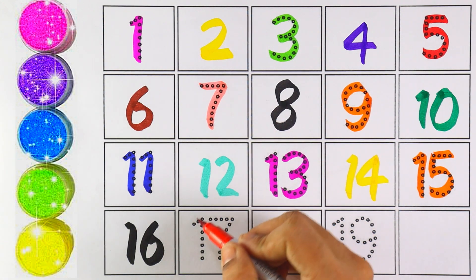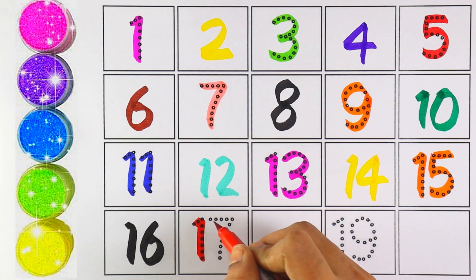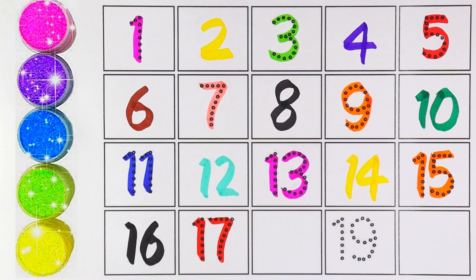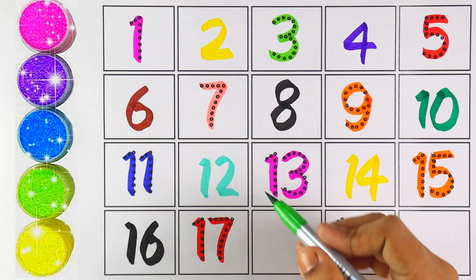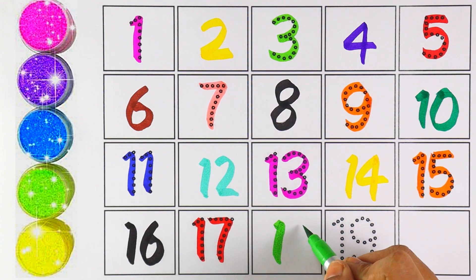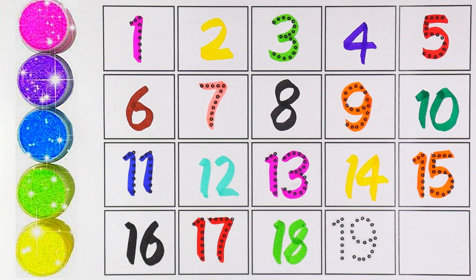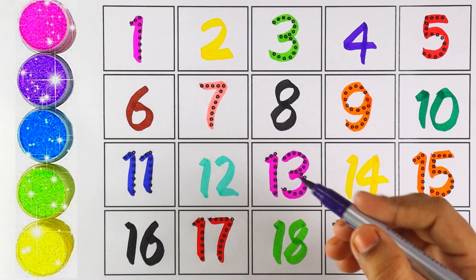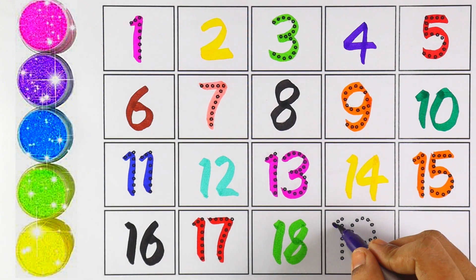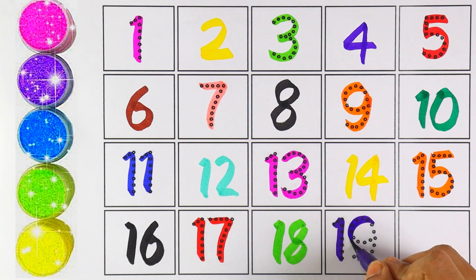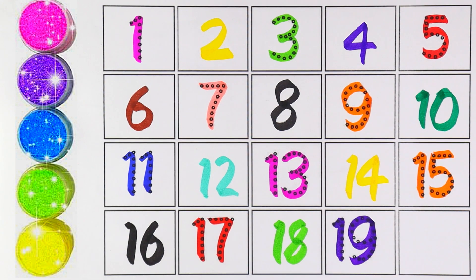Red color — number seventeen. I'm using light green color and the number is eighteen. The next number is nineteen — I'm using purple color for number nineteen.